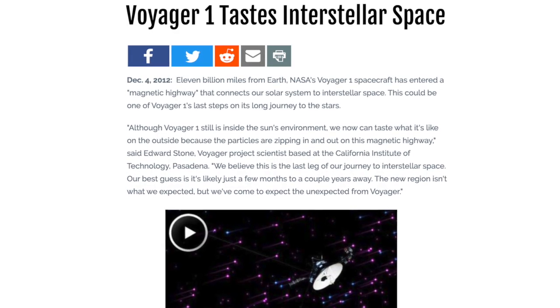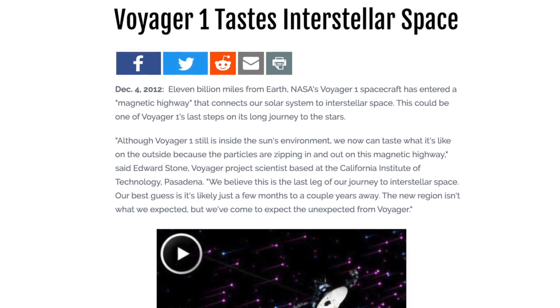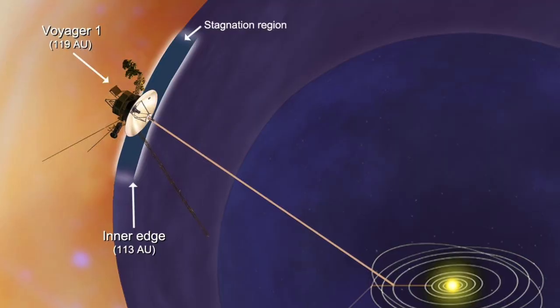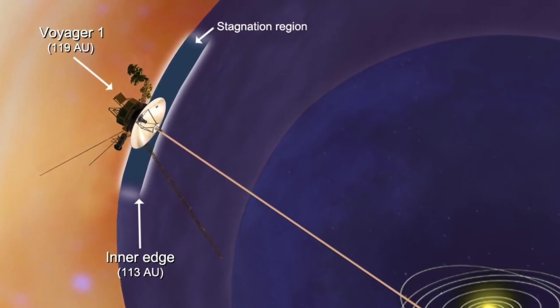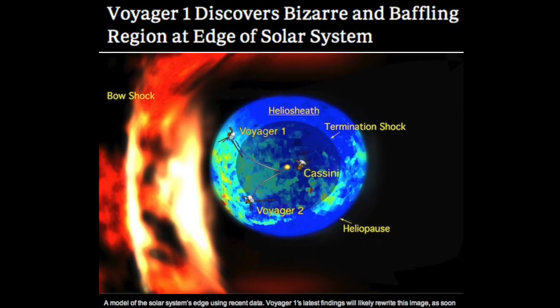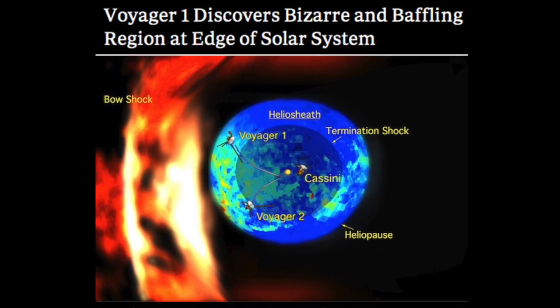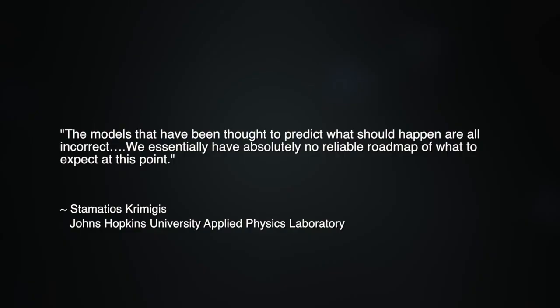In 2012, scientists announced that Voyager 1 had apparently become the first man-made object ever to reach interstellar space. But what the spacecraft told us about the behaviors of the solar wind and the conditions at the interstellar boundary did not match space scientists' theoretical predictions. In 2013, the lead author of a paper in the journal Science told Wired.com of the Voyager 1 data, the models that have been thought to predict what should happen are all incorrect. We essentially have absolutely no reliable roadmap of what to expect at this point.